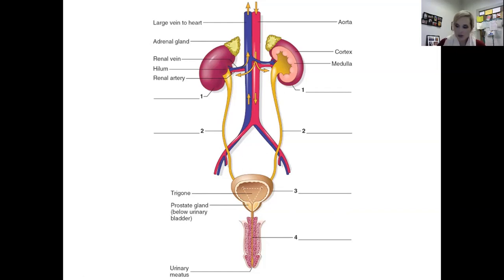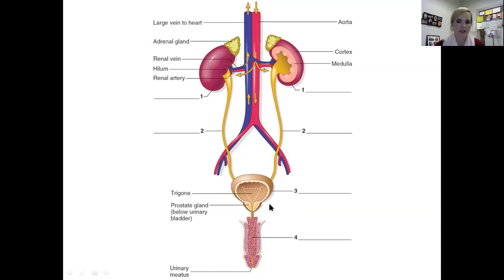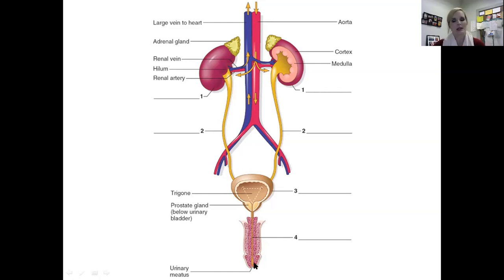In males, the prostate gland sits underneath the bladder. When the bladder fills, it sends a signal to the brain that it's time to go to the bathroom. We voluntarily relax our sphincters and urine travels through the urethra. The opening at the end of the urethra is called the urinary meatus — 'meatus' typically means opening. This diagram is a great summary of the urinary system and how urine is created.